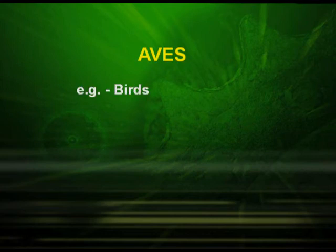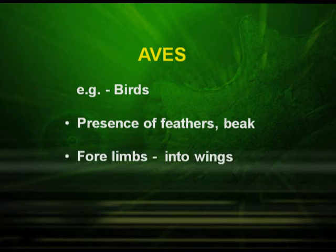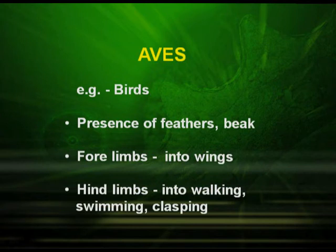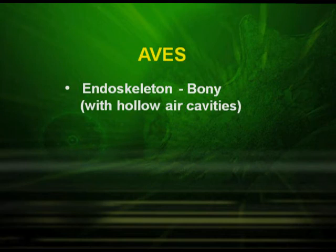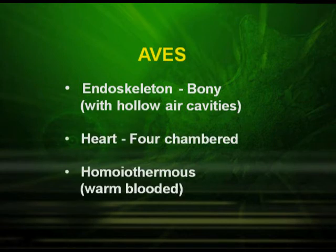Aves includes the birds. Their characteristics are the presence of feathers on the body and a very prominent beak. Their forelimbs are modified into wings and their hind limbs are meant for walking, swimming, or clasping. They have a bony endoskeleton with hollow air cavities. Their heart is four-chambered and they are warm-blooded animals.